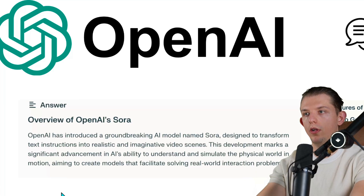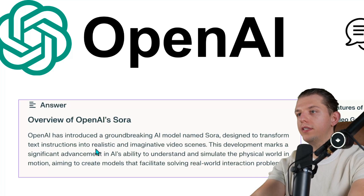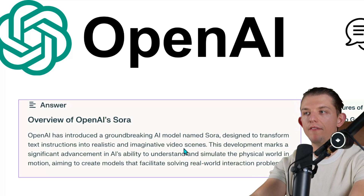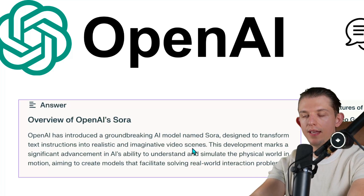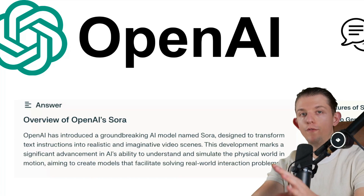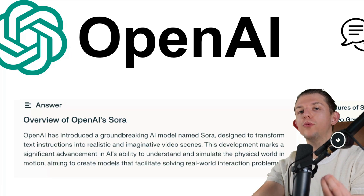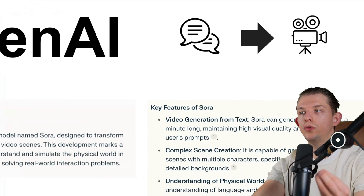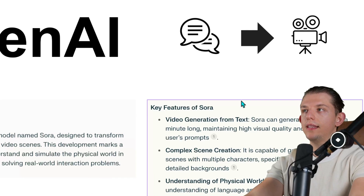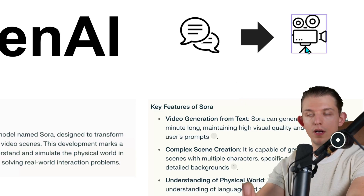This model is called Sora. Sora is designed to transform text instructions into realistic and imaginative video scenes. At first I thought it was just kind of photorealistic videos, but I'm realizing you can add your own style to these. The key features of Sora — it is text-to-video so far.